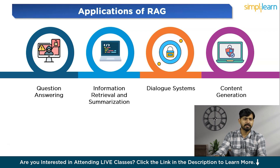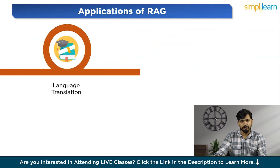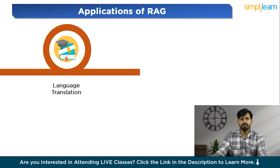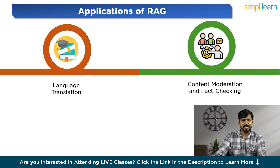RAG can be utilized for content generation tasks such as article writing, content recommendation, and creative writing. By accessing external knowledge sources, RAG can generate content that is well-informed, factually accurate, and contextually relevant. RAG can also enhance machine translation by integrating systems with external knowledge sources — retrieving bilingual text pairs or leveraging multilingual knowledge bases — to generate more accurate translations. Furthermore, RAG can aid in content moderation and fact-checking by automatically identifying misinformation or verifying the accuracy of user-generated content.